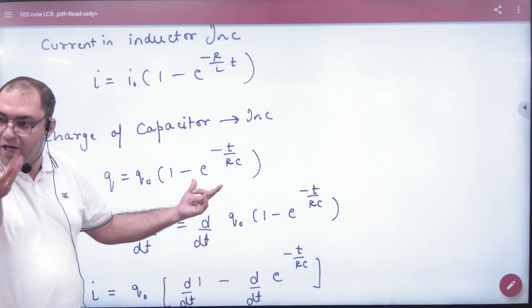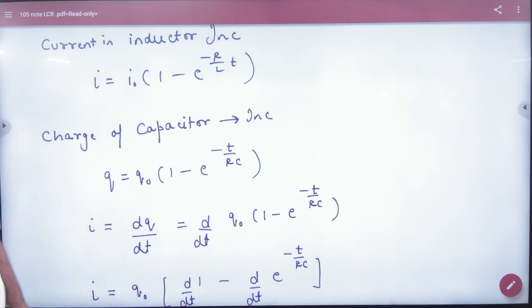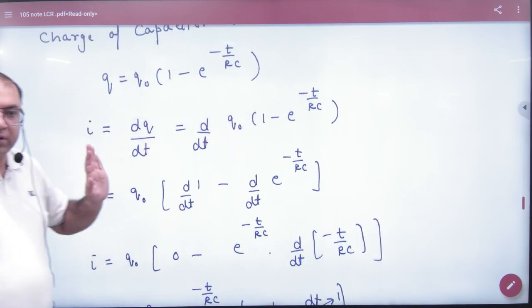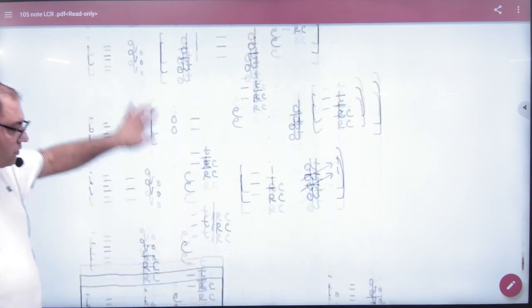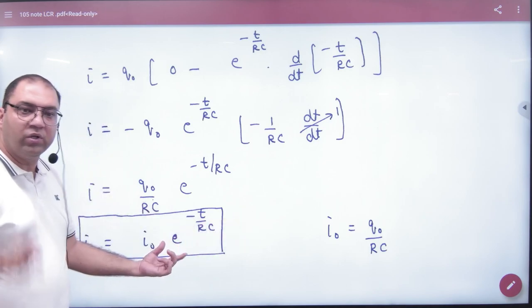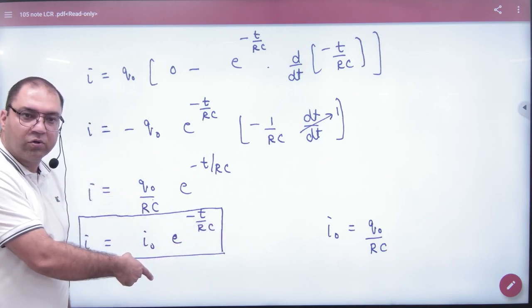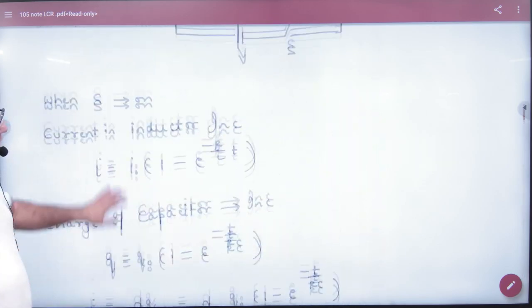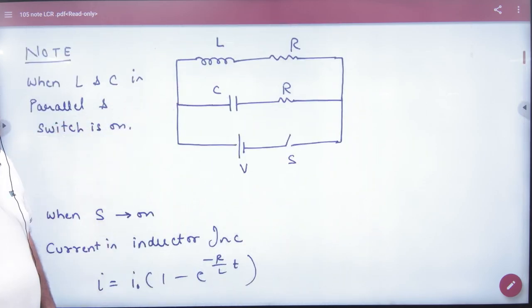Charge will grow, charging. We can differentiate with time, we can differentiate and solve. The current is Q_0 by RC, maximum current. So note this formula. When L and C are parallel, in inductor, in the capacitor.